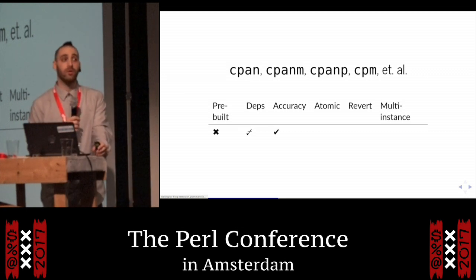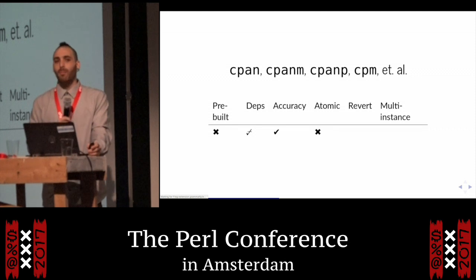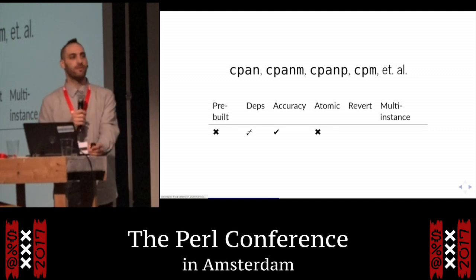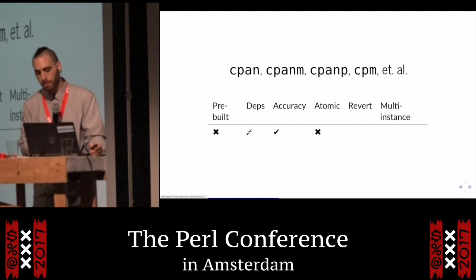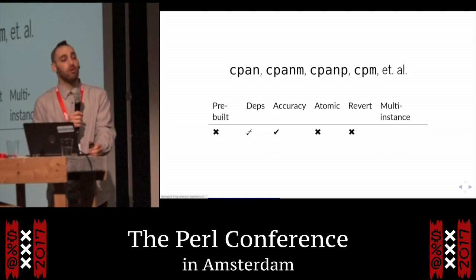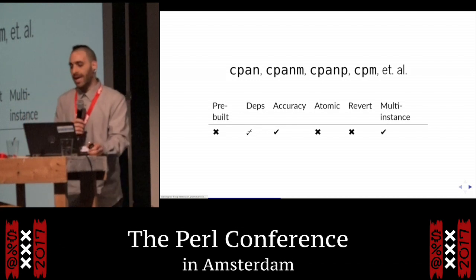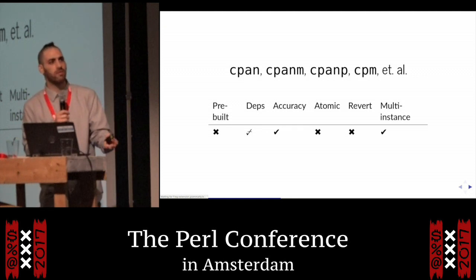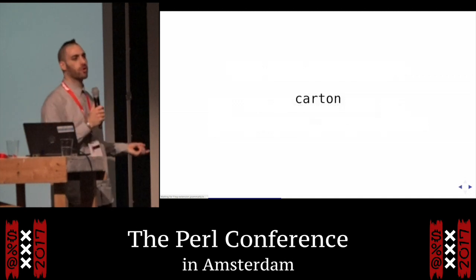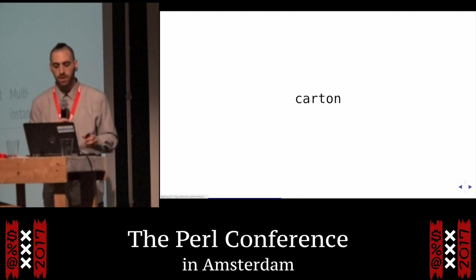Accuracy: they know their own ecosystem well and are accurate about the dependencies they have. But they're not atomic. If you install one dependency that pulls in 100 more and the 50th fails, you now have 49 new modules installed — your rollback is halfway through. What about revert? Barely — you can uninstall now, that's new, but you can't go one step before. And multiple instances: almost all of them have virtualenv, local::lib, Perlbrew, plenv — pretty much every language invented that. There's also an honorable mention for Carton, which allows some of those ideas like pre-built reuse, but that's about its added advantage.